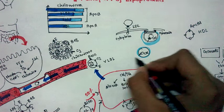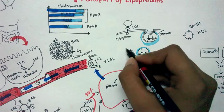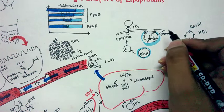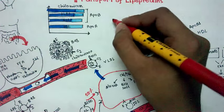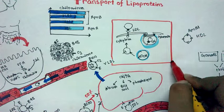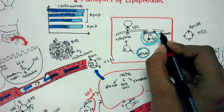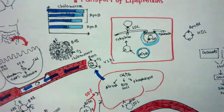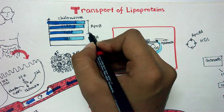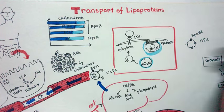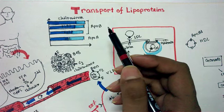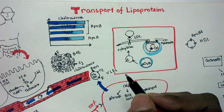The LDL inside the vesicle is degraded and utilized, while the vesicle containing only the receptor is recycled back to the cell surface so more LDL can dock and be internalized. This is receptor-mediated endocytosis, the basic mechanism for LDL and IDL uptake. In summary, ApoB100-containing lipoproteins — especially LDL — are the bad cholesterol because they deposit onto arteries, forming atherogenic plaques.